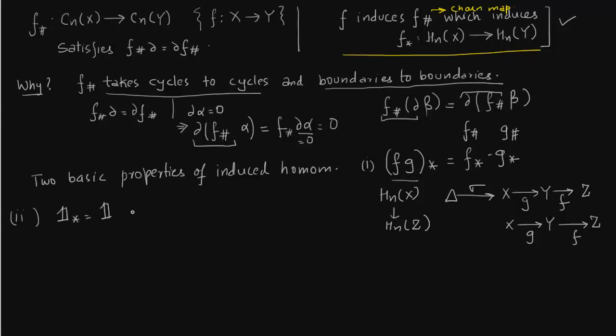The second property is that a chain map from X to X will induce an identity star map from H_n X to H_n X—homology group of X to homology group of X. These two properties seem trivial but you need to write it down. First, write the maps g and f, then write f hash and g hash and how they come about, then write f star and g star.